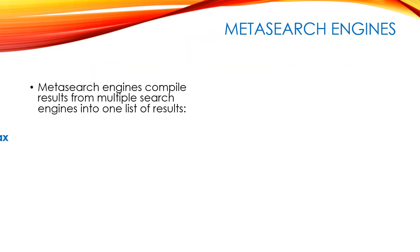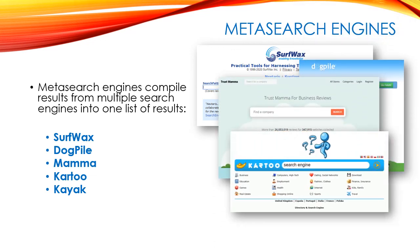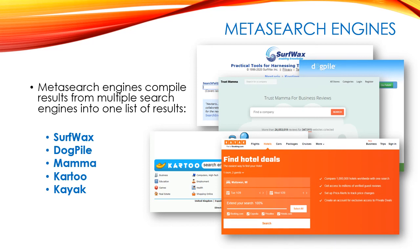Finally, we're going to look at something called meta search engines. A meta search engine is actually a search engine that searches other search engines and collects information — it's kind of a level up from a regular search engine, taking advantage of all those databases simultaneously to give you a more comprehensive list of results. Some are specialized; we'll be using Kayak in our lab this week. Others include Surfwax, Dogpile, Mama, and Cartoo. You're taking advantage of numerous search algorithms from different companies, which do vary, to get a wider variety of hits.